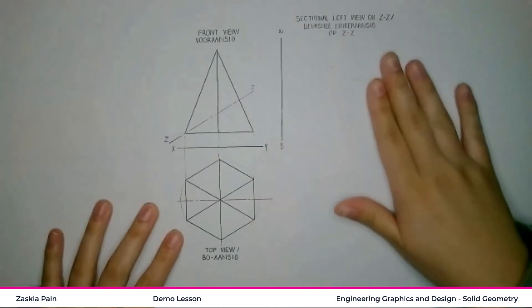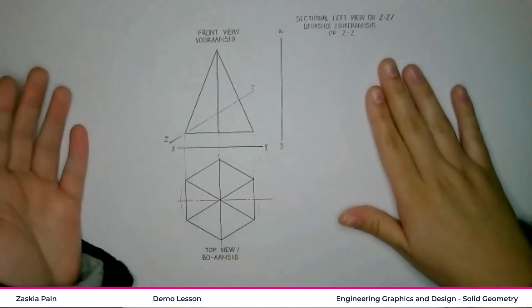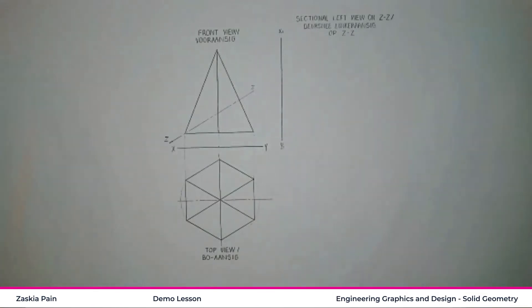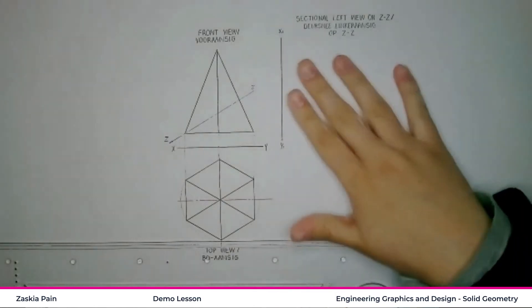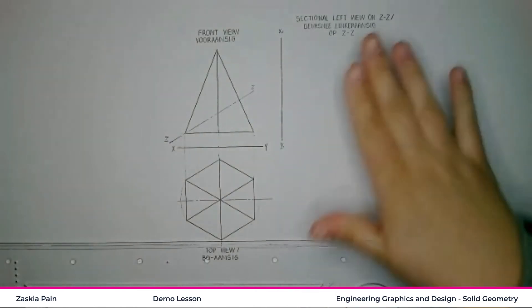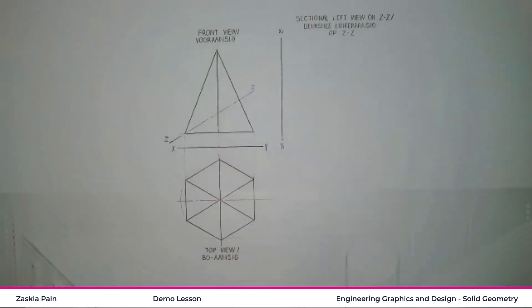Our top view is going to be at the bottom. Our left view will be on the right. And if there were a right view, it would be on the left. So everything's on the opposite side because it is in the first quadrant. We have cutting plane ZZ over here. And we need to draw a sectional left view on ZZ. So we need to show the sectioned part.